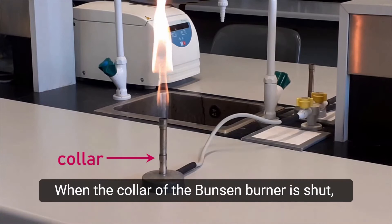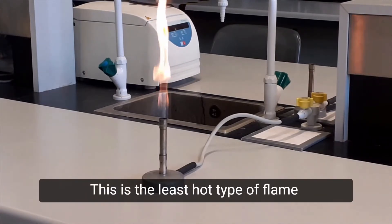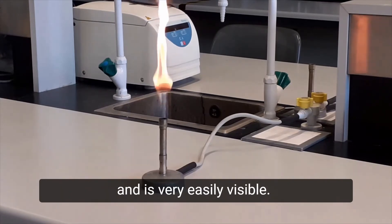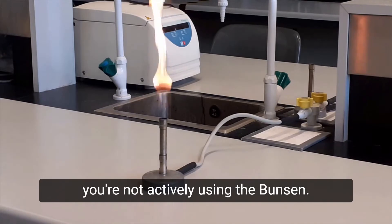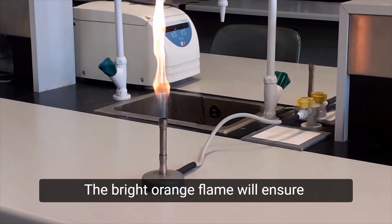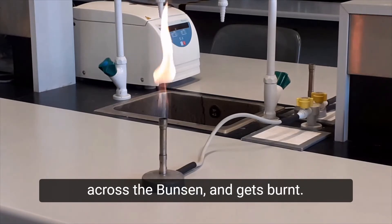When the collar of the Bunsen burner is shut, the flame is orange. This is the least hot type of flame and is very easily visible. Keep the flame like this when you are not actively using the Bunsen. The bright orange flame will ensure that nobody accidentally stretches their arm across the Bunsen and gets burnt.